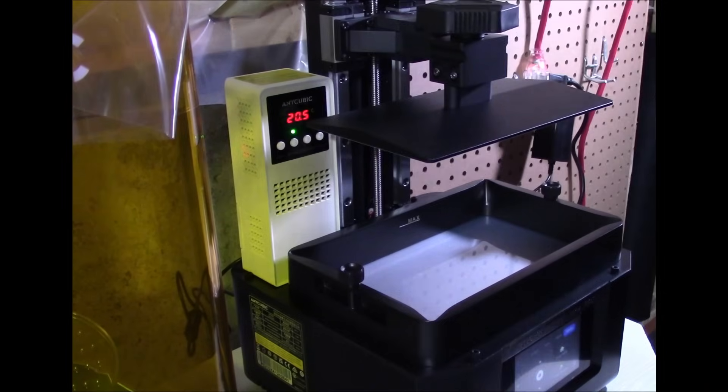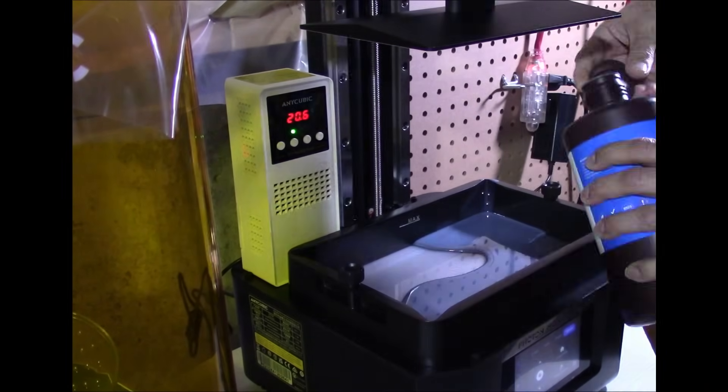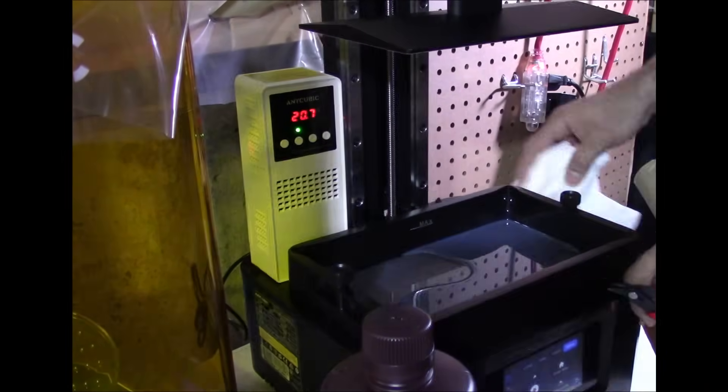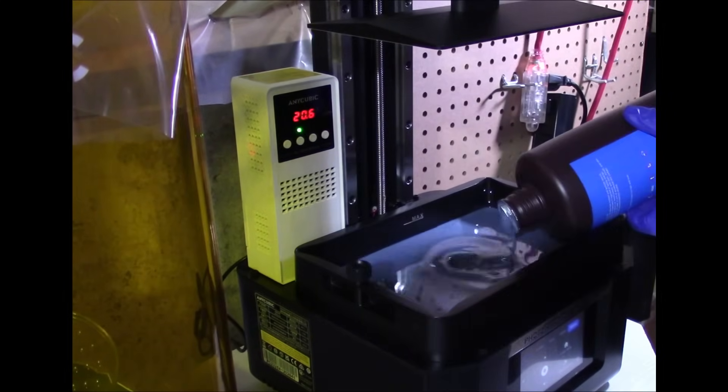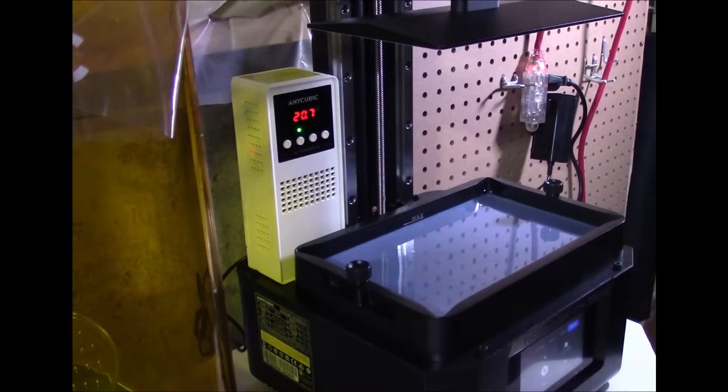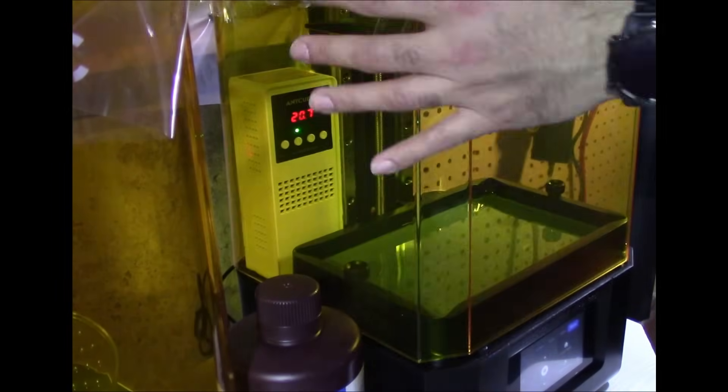Fill the VAT with resin. Do not overfill it, or it will overflow. I learned the hard way. If you spill resin, make sure to use IPA to clean it up.